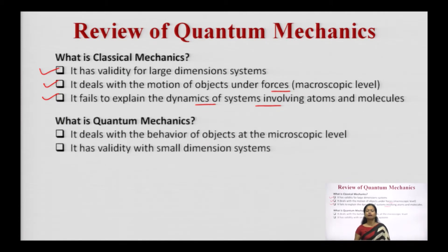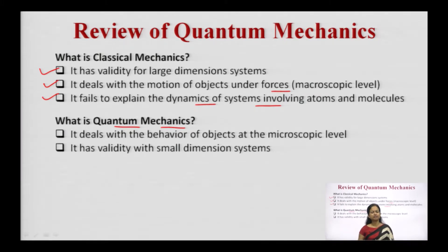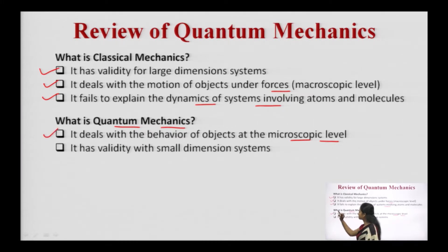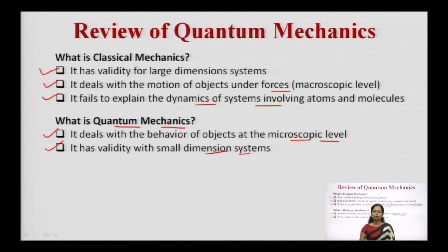Now let us discuss quantum mechanics. Since classical mechanics deals with larger dimension systems, quantum mechanics by contrast deals with systems that are very small in size — even at the microscopic level. Quantum mechanics has validity for small dimension systems, including those dynamics which involve atoms and molecules.